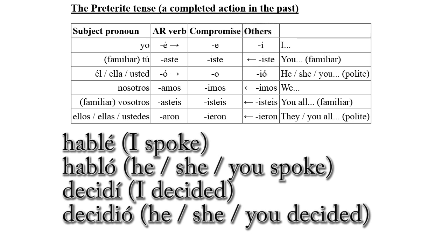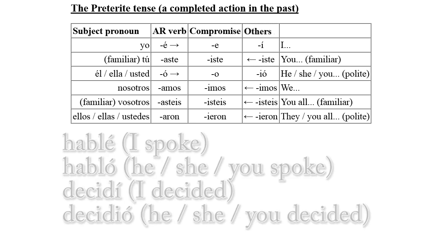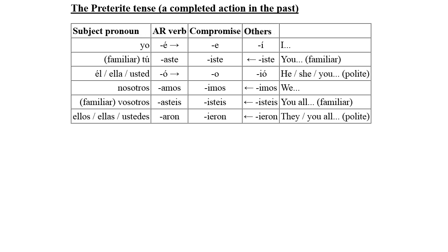For HABLAR, I spoke would be HABLÉ, and he/she/you spoke is HABLÓ. For DECIDIR, I decided is DECIDÍ, and he/she/you decided is DECIDIÓ. You can see that the rest of the AR verb endings again start with an A, and the others do not. On the VOSOTROS form, you cannot use that trick to form it, but what may help is that the TÚ form — used when talking to one person — is ASTE and ESTE, which has fewer letters than the VOSOTROS form ASTEIS and ESTEIS, used when talking to more than one person. Those endings have more letters, so you could think: more letters, more people.